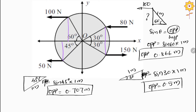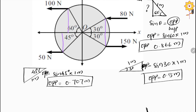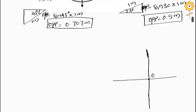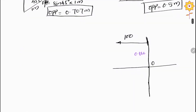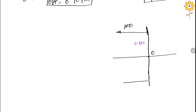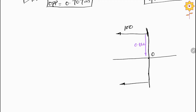We have now found all the distances from point O. We can redraw the diagram. This is our quadrant with starting point O. The 100 N force is acting at a distance of 0.866 meter from point O. We also have a 50 N force below O, acting in the opposite direction, at a distance of 0.707 meter.